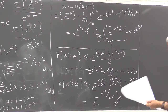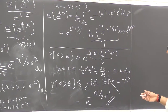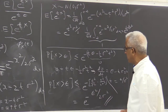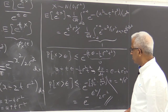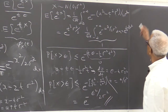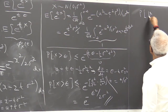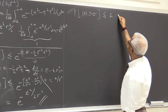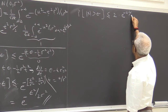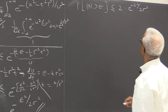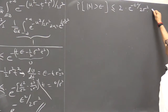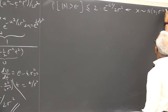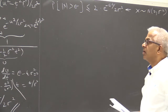So for Gaussian random variables we have a stronger inequality: the probability that x is greater than ε is less than or equal to e^(−ε²/(2σ²)). Including both tails, the probability that the absolute value of x is greater than ε is less than or equal to 2 times e^(−ε²/(2σ²)). This is for x Gaussian with zero mean and variance σ².